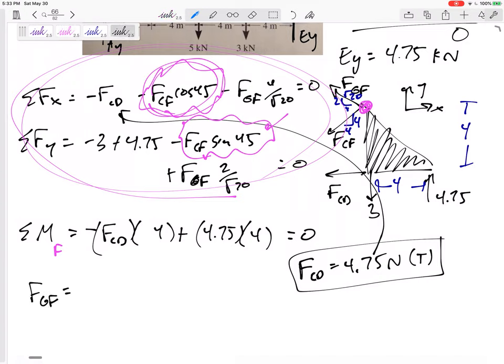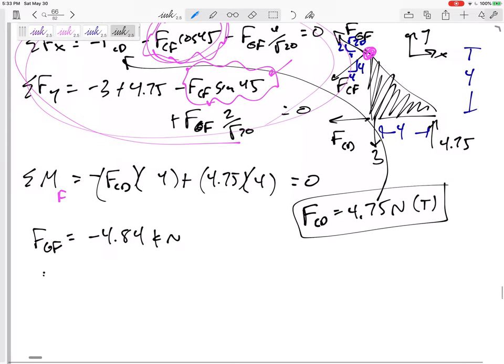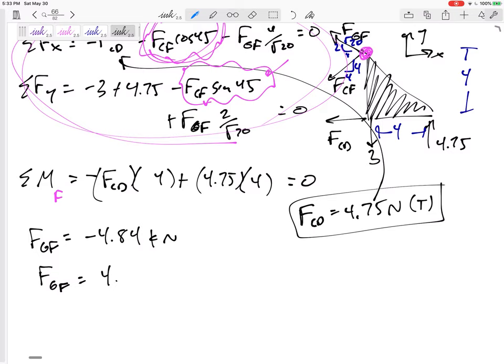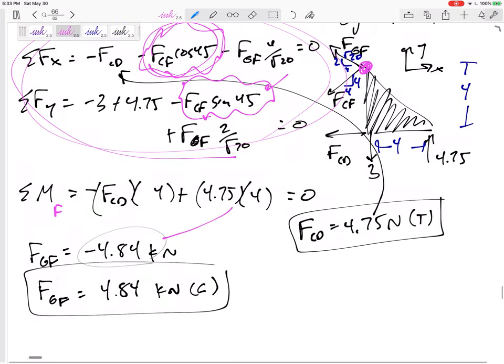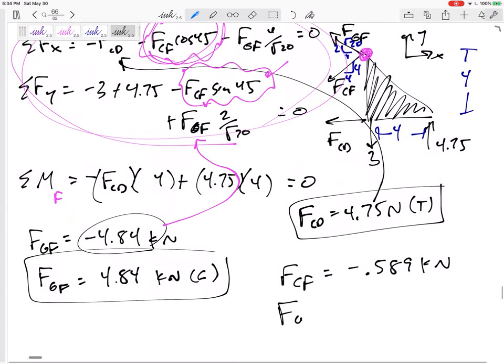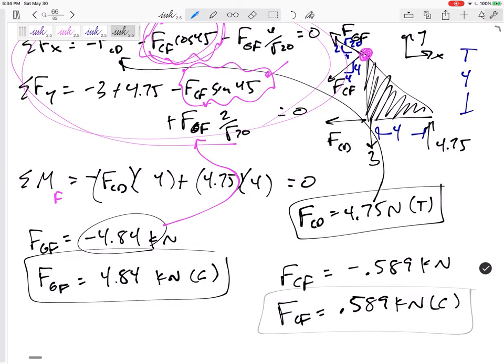FGF would be negative 4.84 kilonewtons. So I'm going to say FGF is 4.84 kilonewtons compression. And then I'm going to plug back in the negative. Remember plugging back in, since I'm going backwards in the equation I've already written, plug in negative 4.84 right there and solve for FCF. And I've got negative 0.589 kilonewtons. FCF is 0.589 kilonewtons compression. Box it in. There we go.